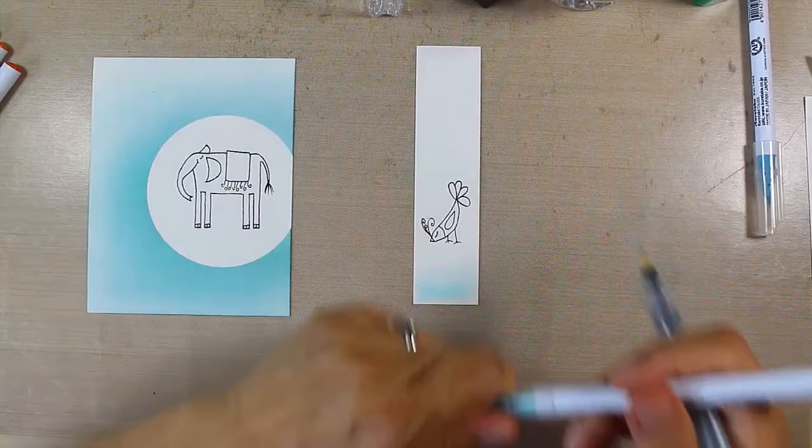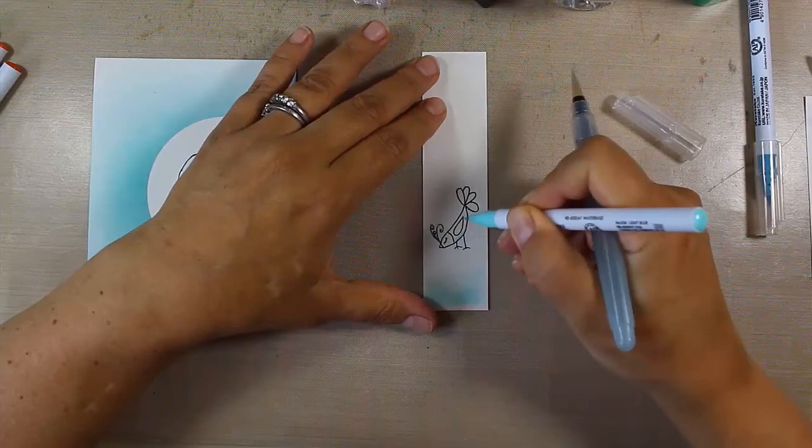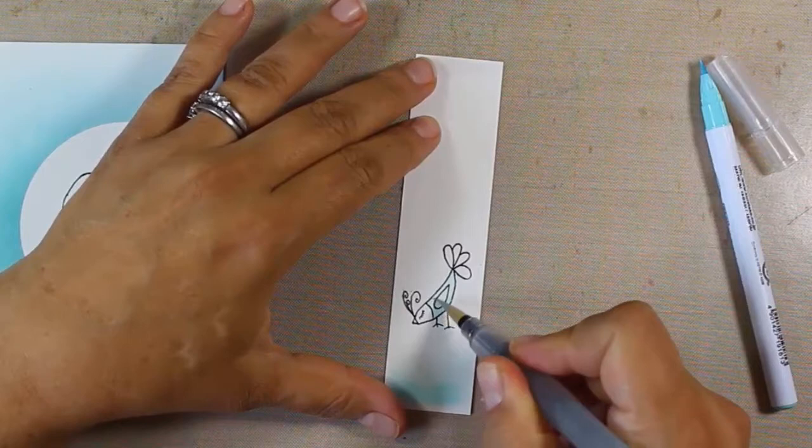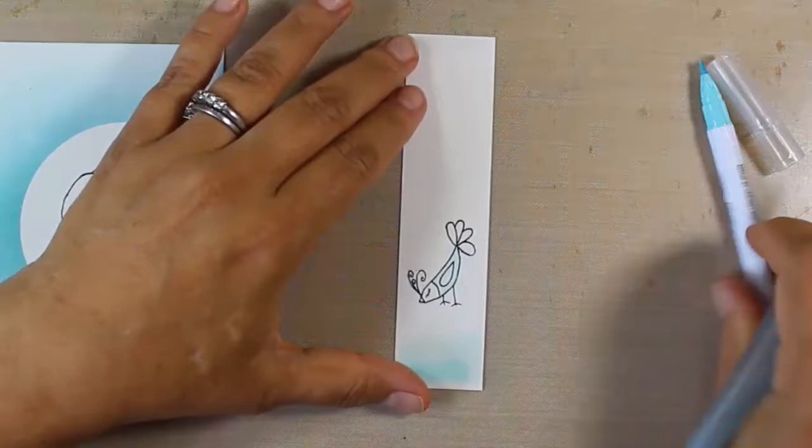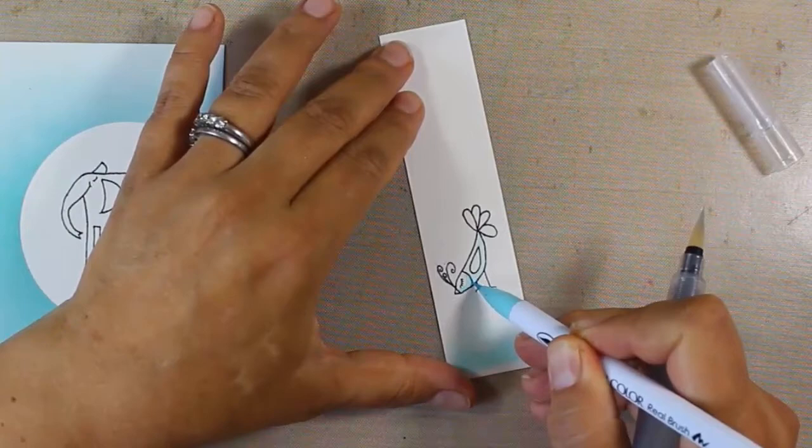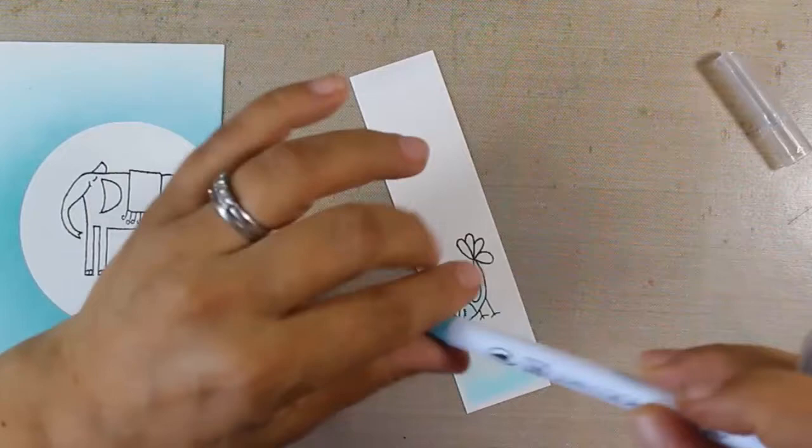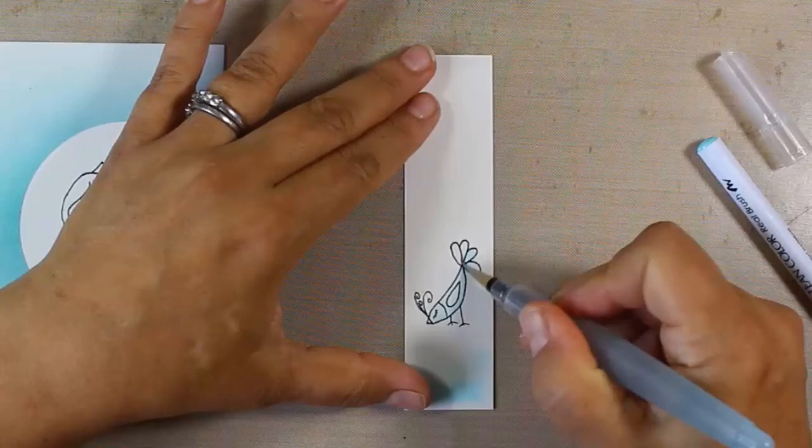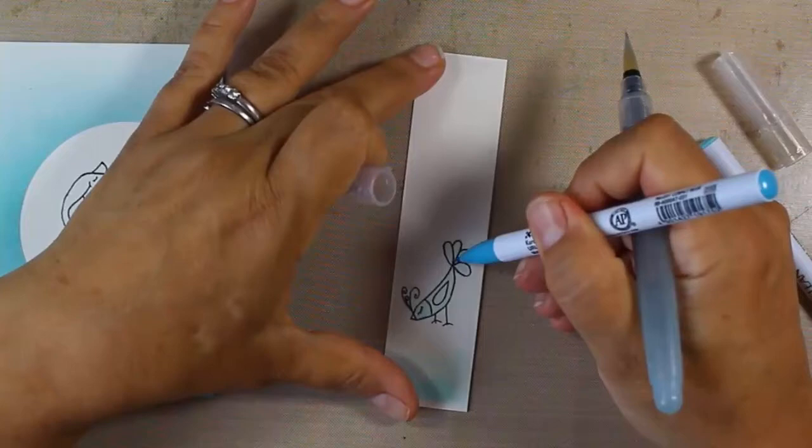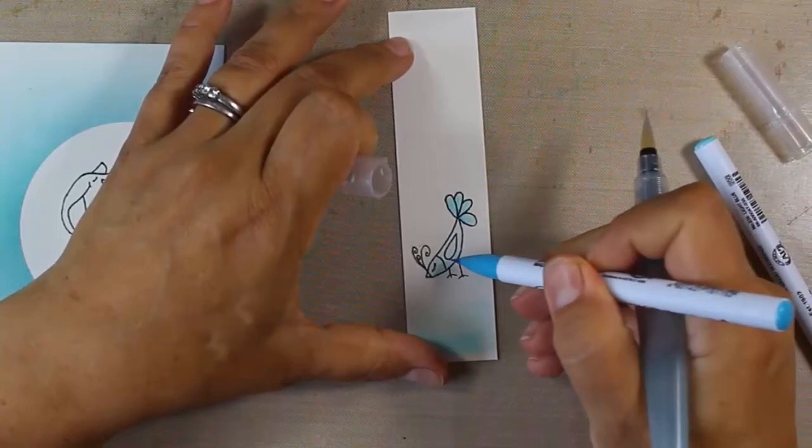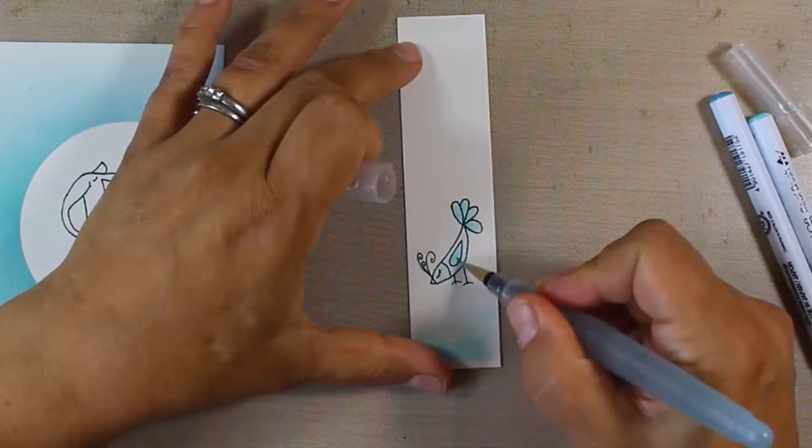I'm just going to bring in a line here of the lighter blue, kind of spread that out using our water brush. You can use a regular watercolor brush and some water as well. I'm going to come in here and just color in my entire image, do the beak, I'm going to do all of it actually.